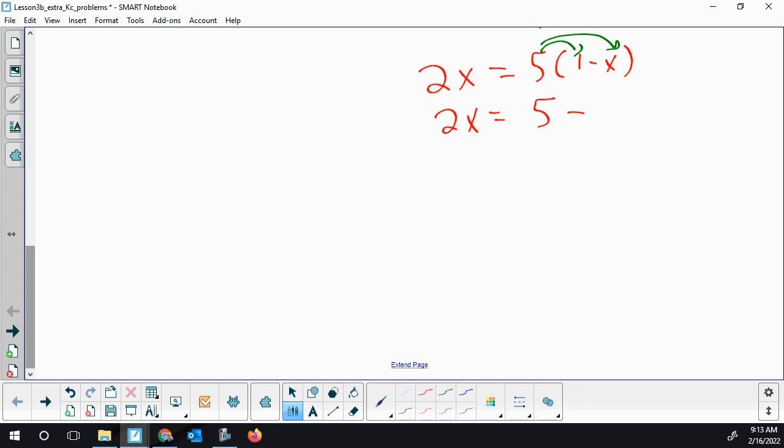So we have 5 minus 5x. We're almost done. I'm going to move all the x's to the left - we've got minus 5x on the right. When I move it to the left, that'll become positive, so 2x plus 5x. So 7x equals 5, so x equals 5 over 7.